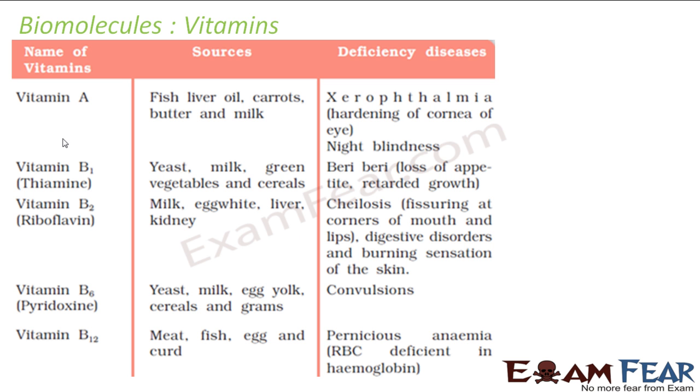If you see the vitamins, I have a table for this. Vitamin A is found in fish, liver oil, carrots, buttermilk. If you don't take this properly, you will get xerophthalmia - hardening of cornea of eyes - you get night blindness.